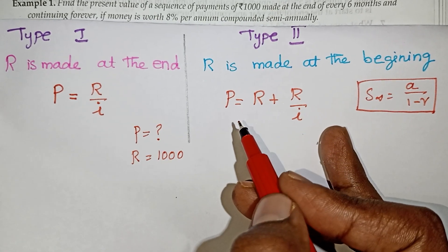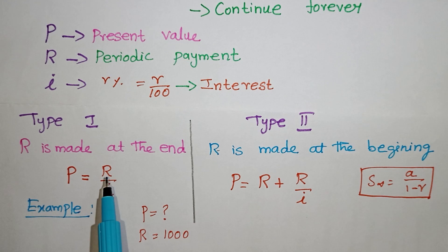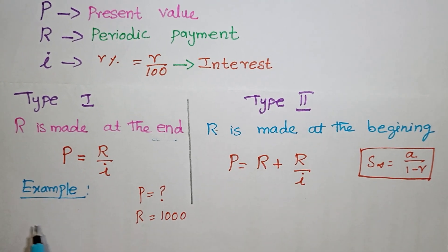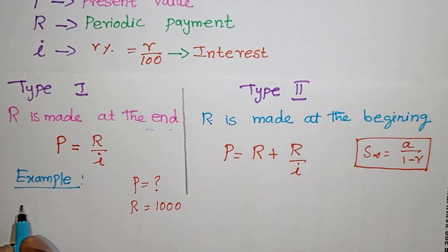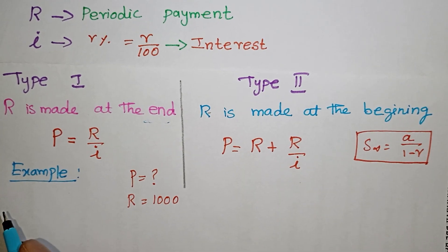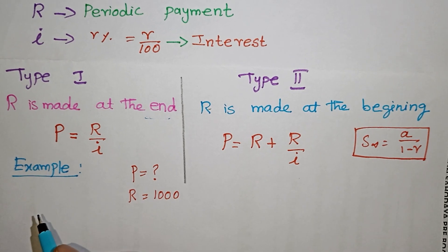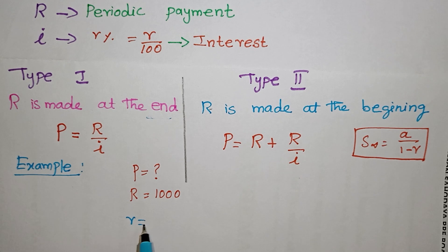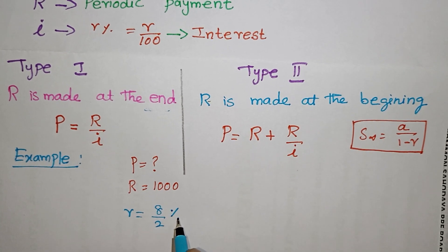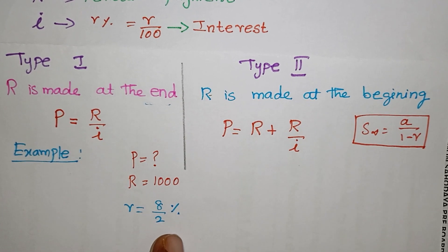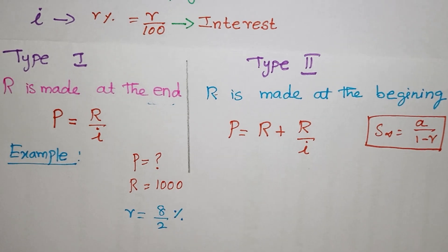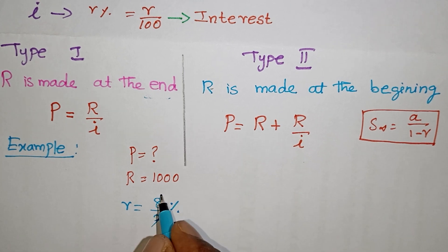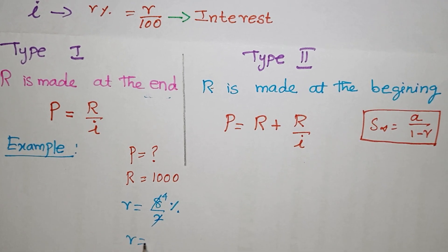Now we will find the rate of interest. The annual rate is 8%, compounded semi-annually. So i equals 8 divided by 2 percent, which gives 4%. As a decimal, i equals 4 divided by 100, which equals 0.04. The periodic payment R is $1,000, paid at the end of every 6 months.